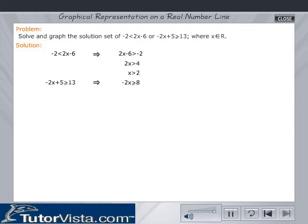Then, solving -2x + 5 ≥ 13, we get x ≤ -4.